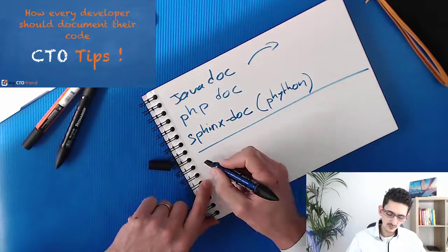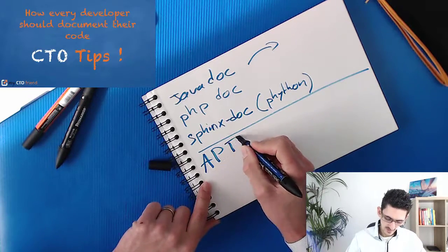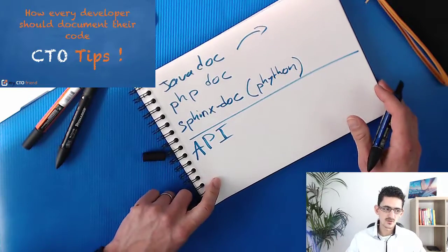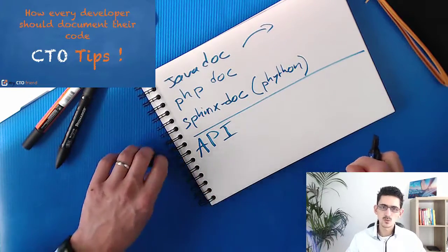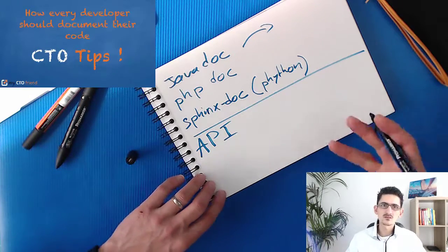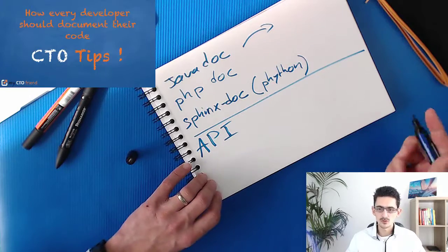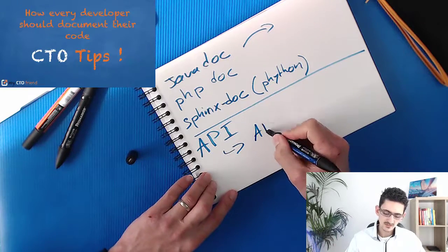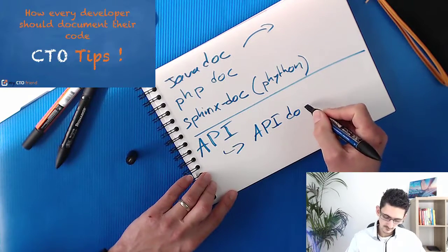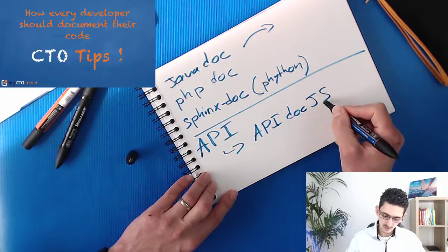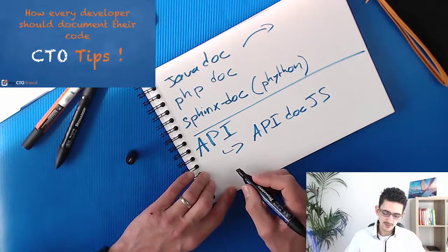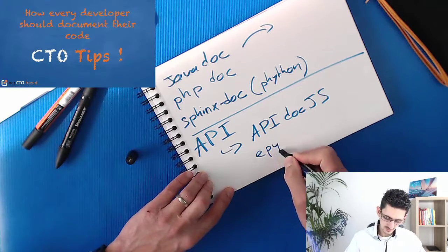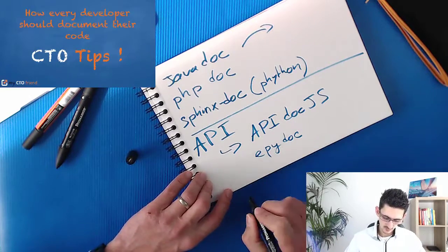Now, if you are talking about APIs — an API is what allows other developers to connect to our own software. That's something very important while you are building a tech startup, as it's interesting to allow others to use our product. In that case, I highly recommend you to use apidoc.js. Or if you are in Python, epidoc is a good one too.